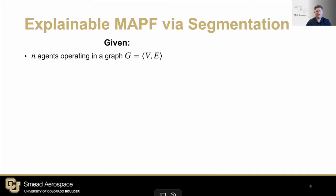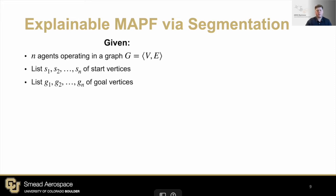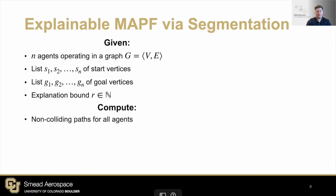Formally, we have n agents operating within a graph, and we also have some start and goal vertices, which represent the initial and final points of our agents. This would be enough to solve the classic MAPF problem. However, our explainable MAPF problem will also need an explanation bound R, which is the maximum allowable number of segments within the explanation. The solution to our problem consists of two parts: the first is our classic MAPF solution of finding safe paths for all agents, and the second, which is new, is that the plan can be decomposed into a maximum of R segments.